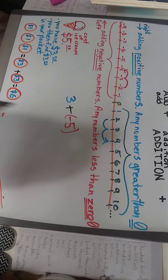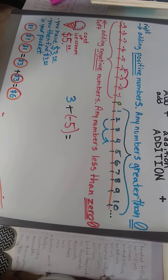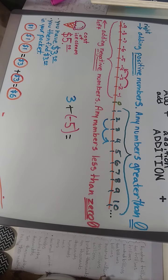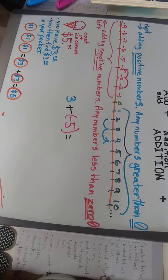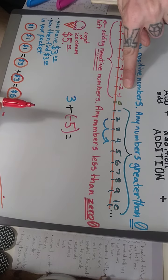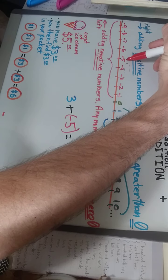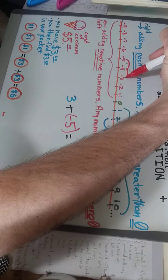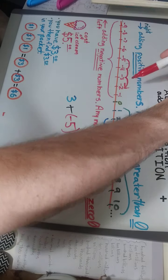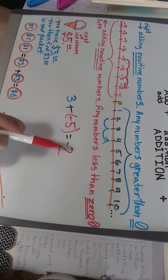To find that out, the store owner would say, hey, you only have three dollars. That's not enough. The store owner would calculate negative five plus your three dollars - one, two, three - leaving you at negative two. So you're still two dollars short.